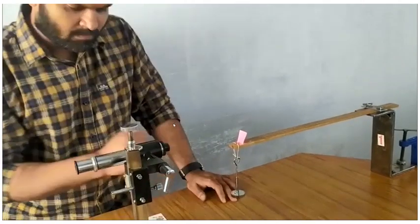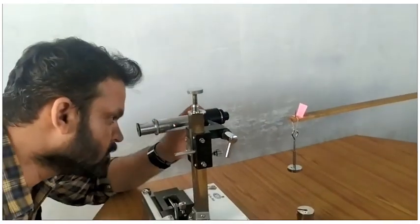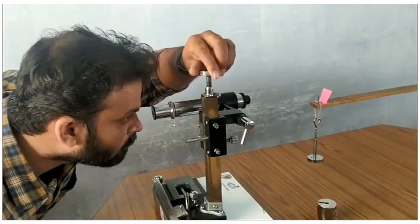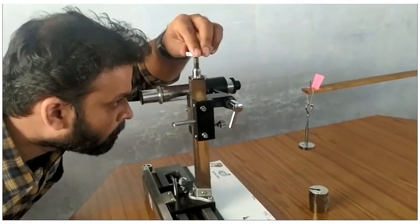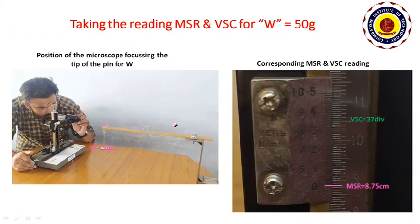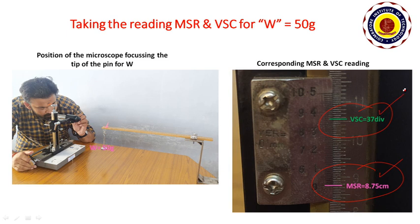This is a video illustration on how to focus the tip of the pin after loading initial weight W equal to 50 grams. After focusing the tip of the pin, you have to take the corresponding MSR reading and VSE reading. In this reading, the MSR reading is equal to 8.75 centimeters and VSE reading is equal to 37 divisions. Carefully note down the readings.